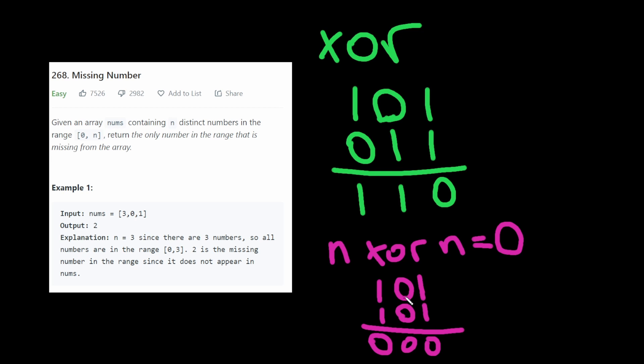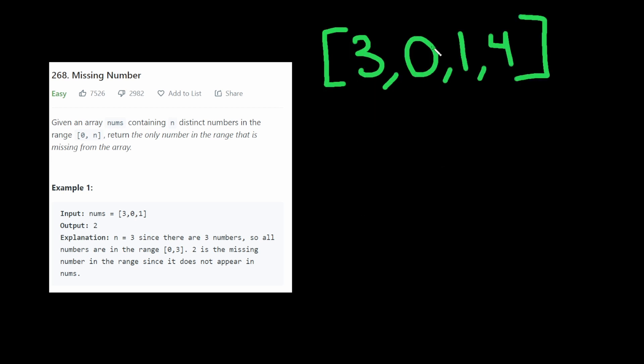Now let's see how this actually helps us for this problem. Okay, so we have this array, and we have to return 2, because 0, 1, it's missing a 2, 3, and 4.